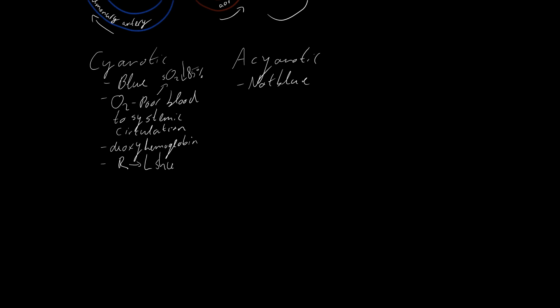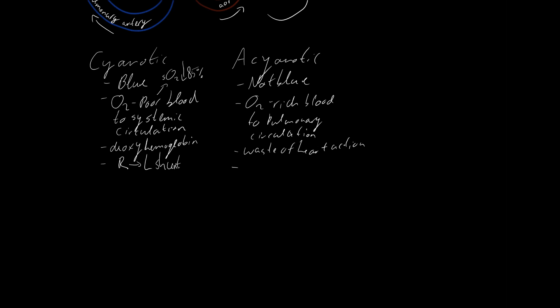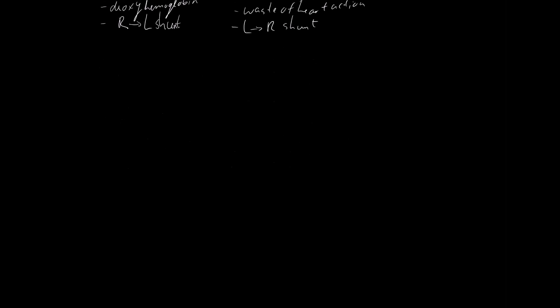Cyanotic heart disease is usually the result of a right-to-left shunt — blood moving from the oxygen-poor right vascular system to the left. Acyanotic heart disease means O2-rich blood flows to the pulmonary circulation, which is a waste since the pulmonary circulation's only purpose is to oxygenate and decarbonate blood. Acyanotic heart disease is usually the result of a left-to-right shunt.